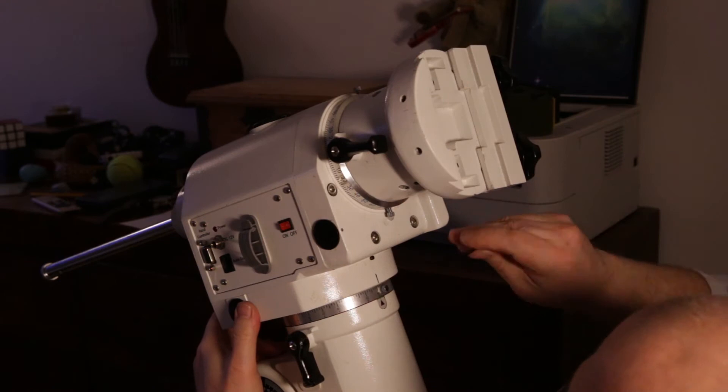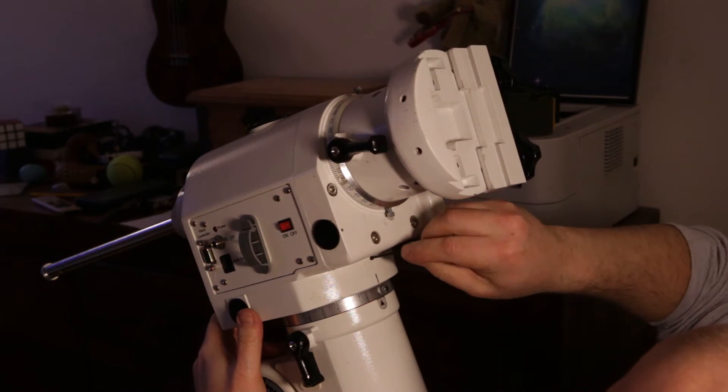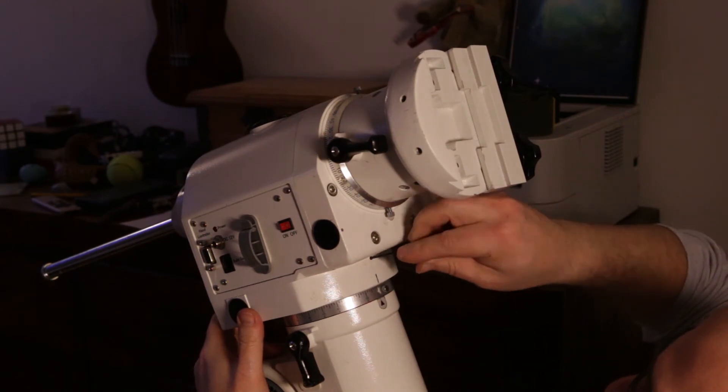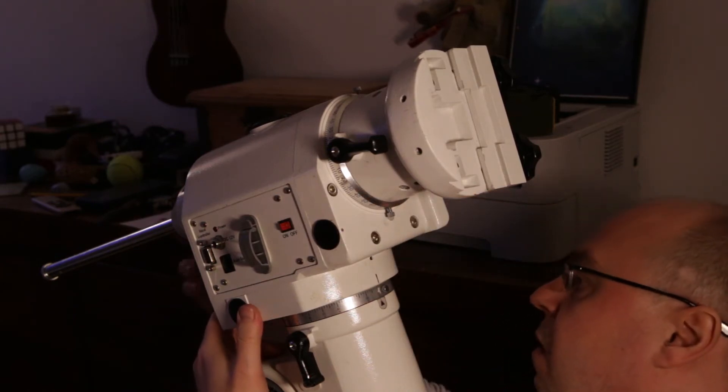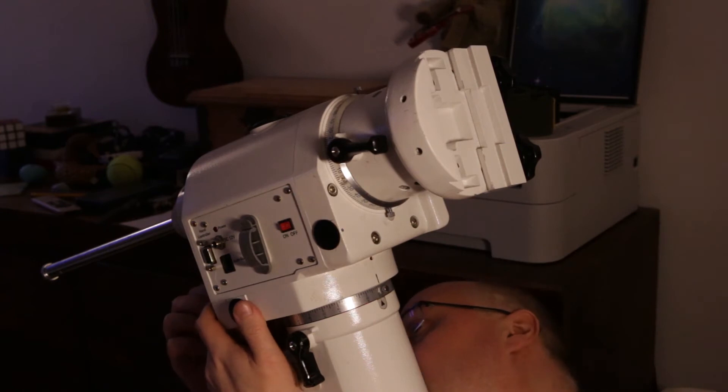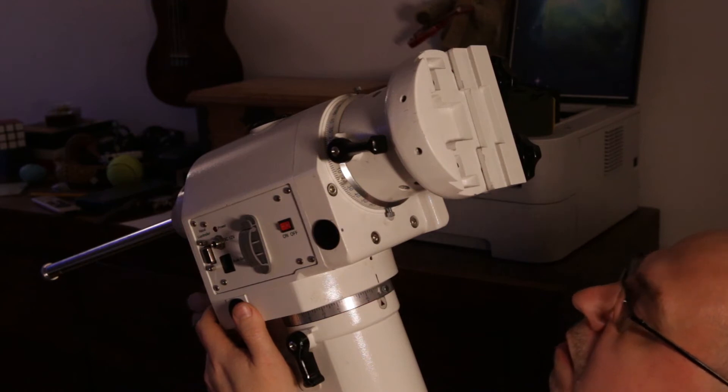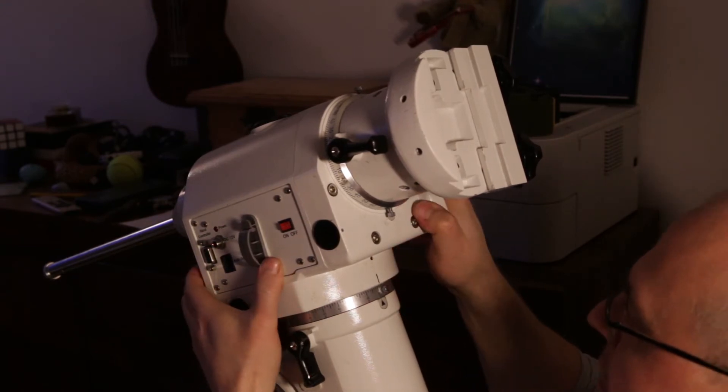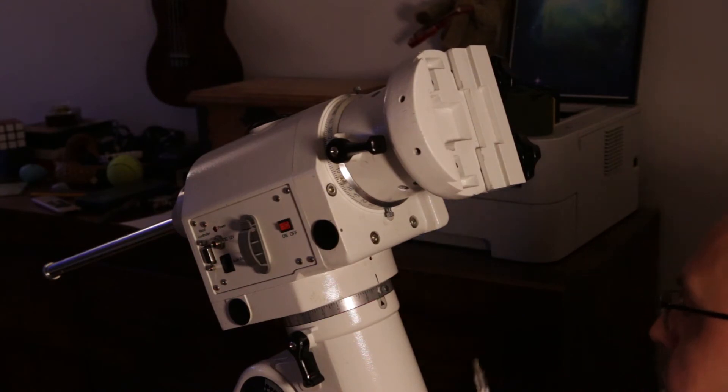Again, using this grub screw we're going to have to find a good tightness. That's finger tight now. Tighten the other one. Finger tight as well. I can't feel any play there, so it should be alright.